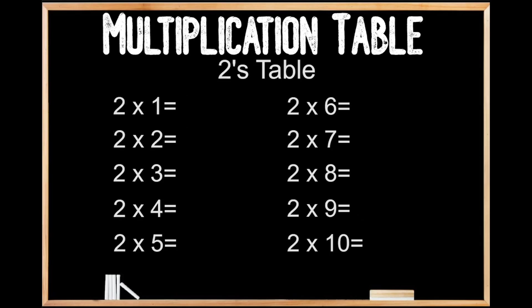2's table. 2 times 1 is 2. 2 times 2 is 4. 2 times 3 is 6. 2 times 4 is 8. 2 times 5 is 10. 2 times 6 is 12. 2 times 7 is 14. 2 times 8 is 16. 2 times 9 is 18. And 2 times 10 is 20.